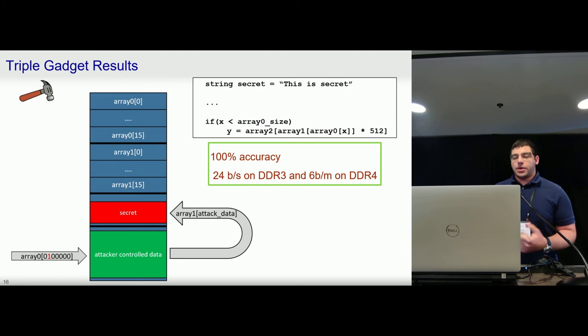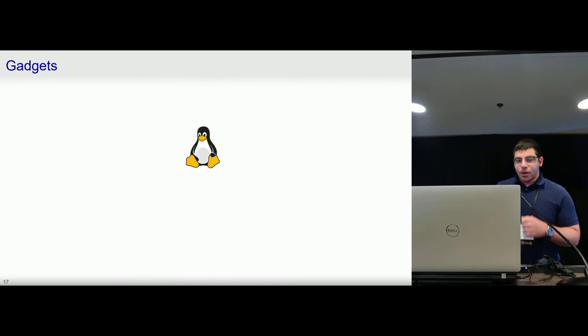And the goal here was to leak a string that sat as a global variable outside of the bounds of these arrays. We're able to leak values from this string with 100% accuracy at a rate of 24 bits per second on DDR3 and 6 bits per minute on DDR4.